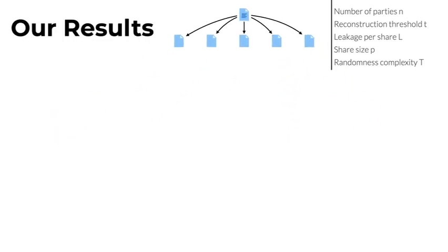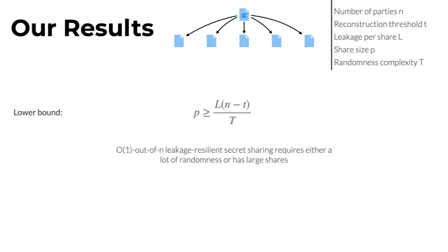The results in our paper are as follows. We present a lower bound relating all of these parameters — roughly speaking, it gives a lower bound on the share size that depends on the number of bits leaked and on the randomness complexity of the scheme. If the randomness complexity is very small, the share size will potentially have to be very large. For example, if the reconstruction threshold small t is 2, the share size will be linear in L times N, whereas if the randomness complexity is large, the share size can potentially be much smaller.